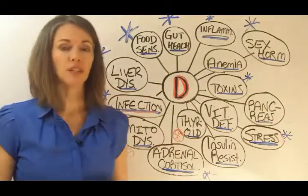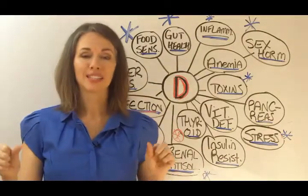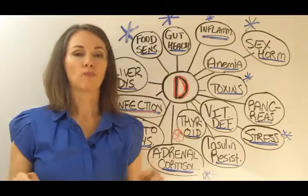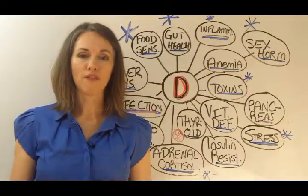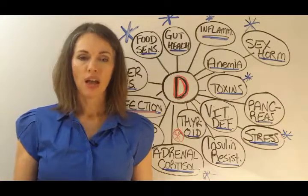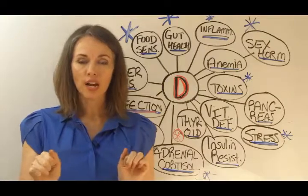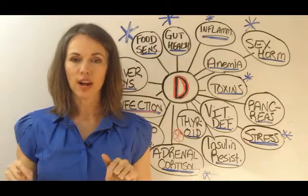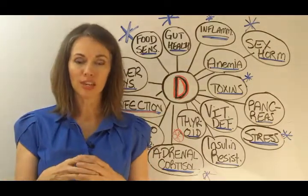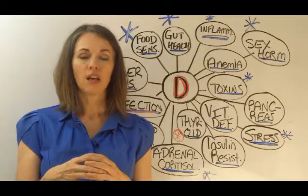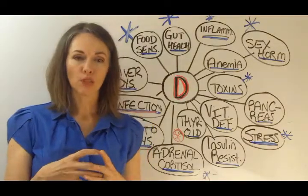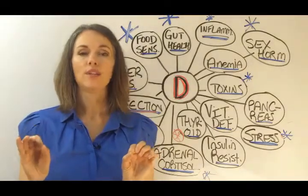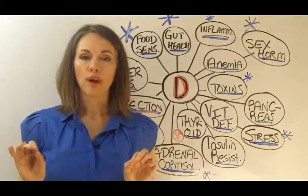Mitochondrial dysfunction — this is at a cellular level what runs our metabolisms. Every cell has these little tiny organelles, these little things that float around inside of them. One is the nucleus, that's the center of the cell where all of your DNA is produced. Then you have these other little guys that float around and they're called the mitochondria.